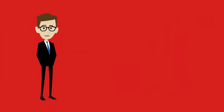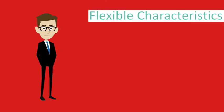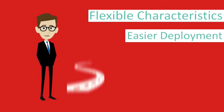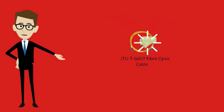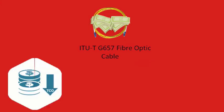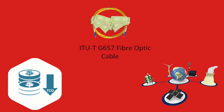The ITU-T G657 fiber optic cable offers flexible characteristics for easier deployment in streets, buildings, and homes. In addition, the ITU-T G657 fiber optic cable reduces the rollout costs for operators and the total cost of ownership, TCO, of an FTTH network as follows.